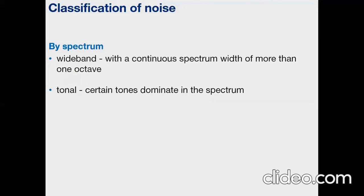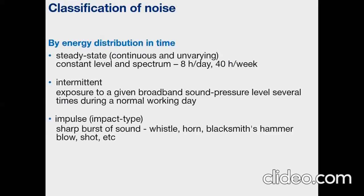By spectrum, noise is divided into wide-band — a noise with a continuous spectrum width of more than one octave — and tonal noise, with certain tones dominating the spectrum. A noise with the same intensity across all frequencies is conventionally referred to as white noise. By energy distribution in time, noise is divided into steady-state or continuous, intermittent, and impulse. Continuous noise is normally defined as broad-band noise of approximately constant level and spectrum to which an employee is exposed for a period of 8 hours a day, 40 hours a week. A large number of industrial operations fit into this class of noise exposure. Most damage risk criteria are written for this type of noise because it is the easiest to define in terms of amplitude, frequency content, and duration.